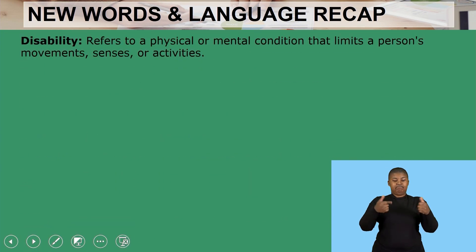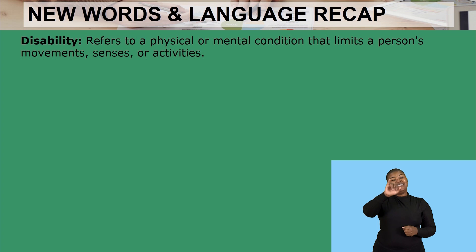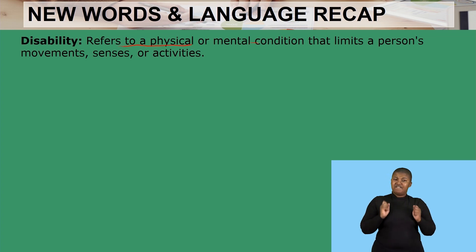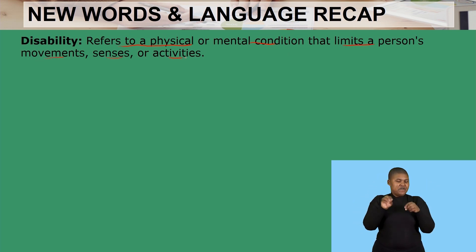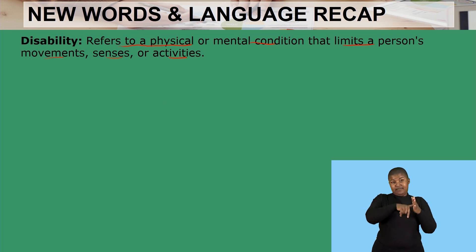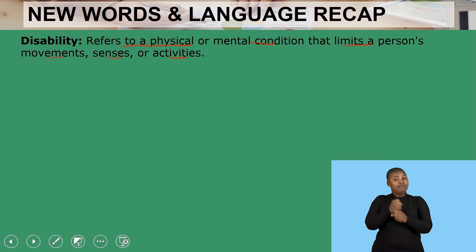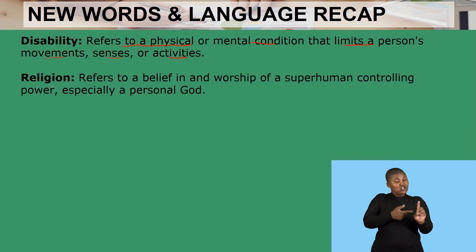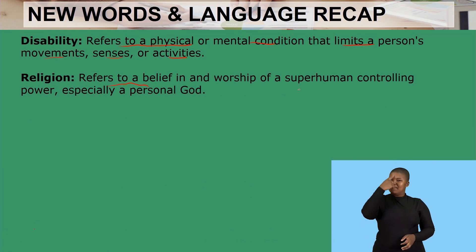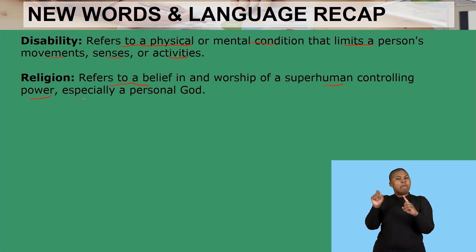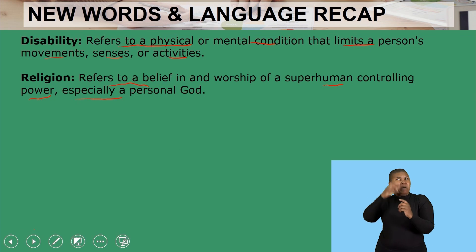Then we have the term disability as a diversity issue, which refers to a physical or mental condition that limits a person's movement, sense, or activity. This means the business should accommodate such a person. Then another aspect is religion, which refers to a belief in or worship of a superhuman or controlling power, especially of a personal god.